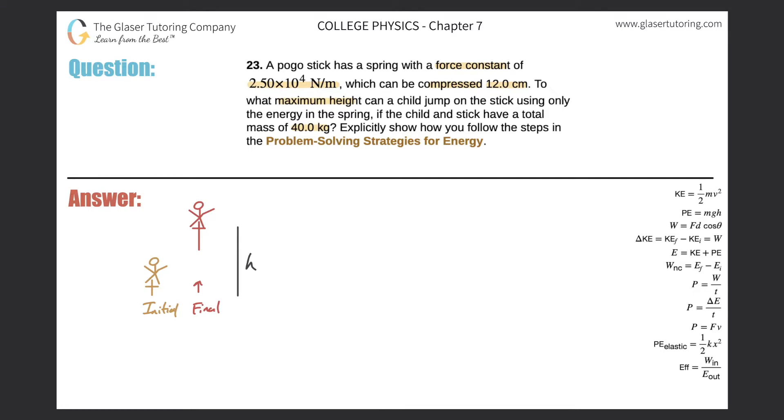So there's two states to the system. There's an initial state in which the spring is fully compressed, so all the energy is stored within the spring. And then the final state, since they're asking me for the maximum height that can be obtained, the final state will be the tallest point that the child and pogo stick reaches. So those are the two frames.